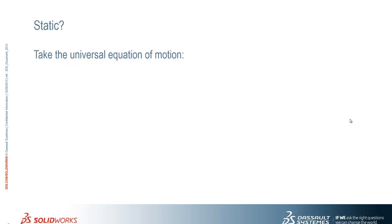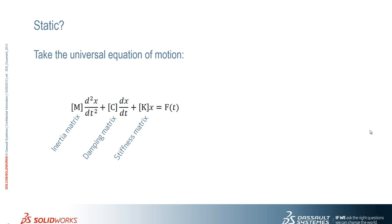Let's talk about linear static for a moment - concentrating on the word 'static'. A static study is literally looking at a specific section of the equation for universal motion. It's split into different areas: the inertia matrix, the damping matrix, and the stiffness matrix, with force and time on the other side. By making assumptions with a static study - that loads are applied slowly and loads are constant - we can remove the inertia matrix, damping matrix, and time-dependent terms from the equation, leaving us with just the stiffness matrix.